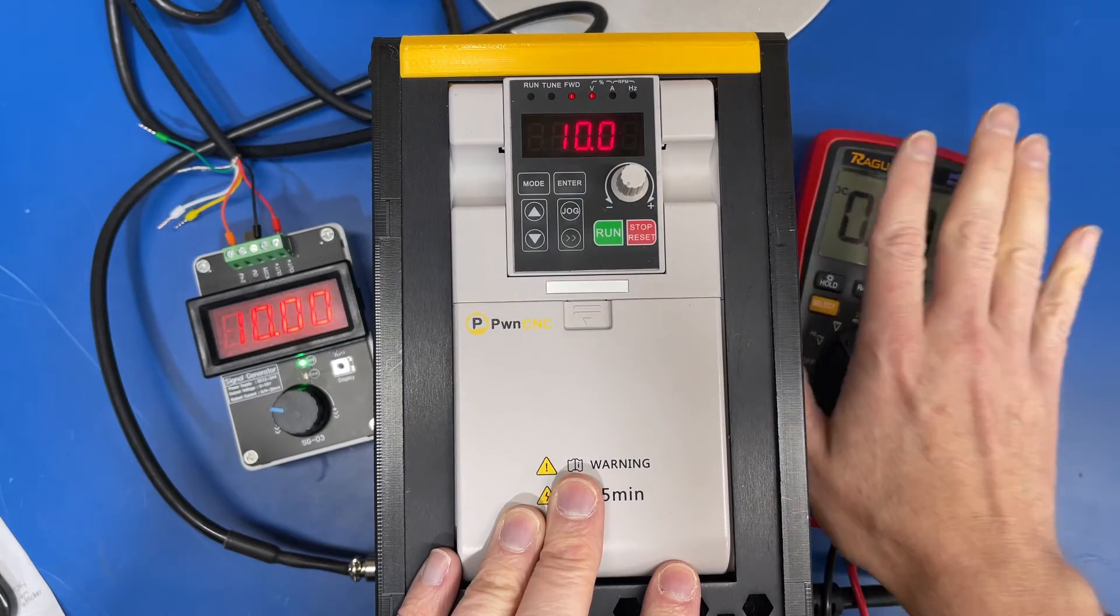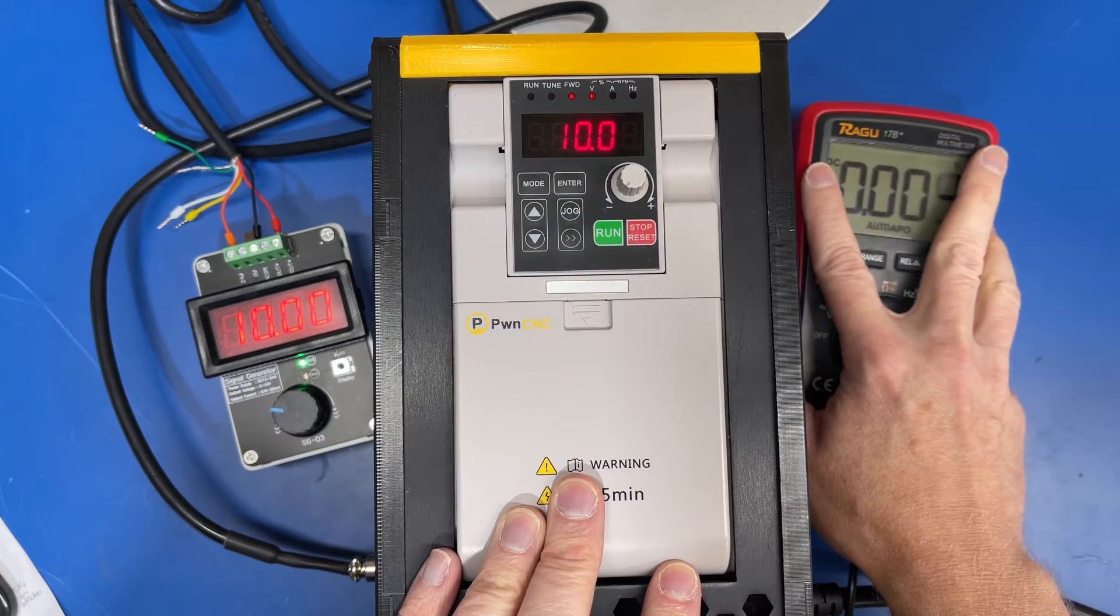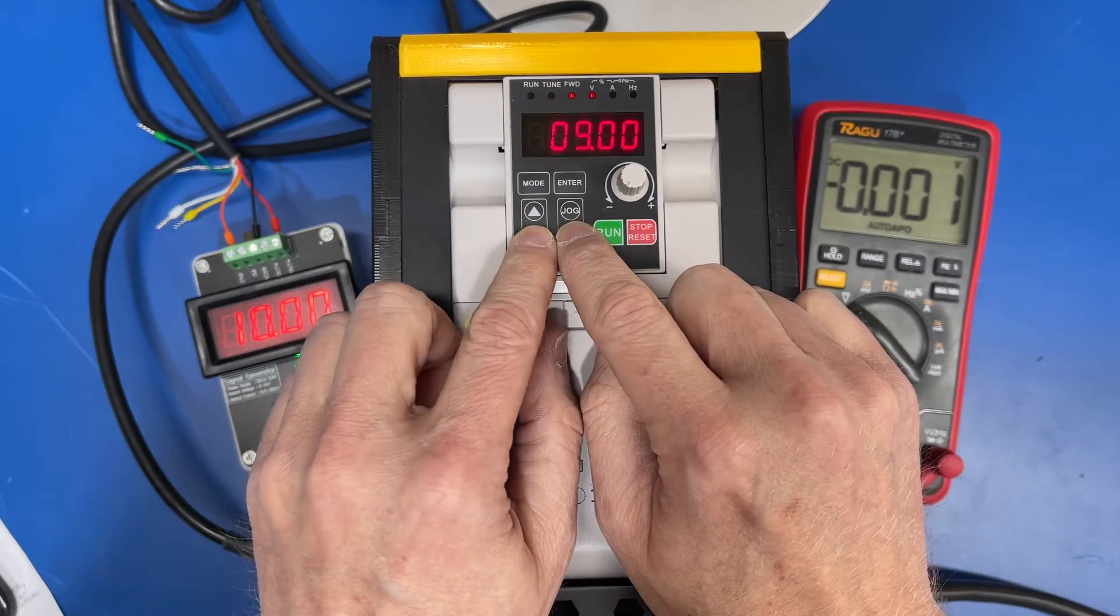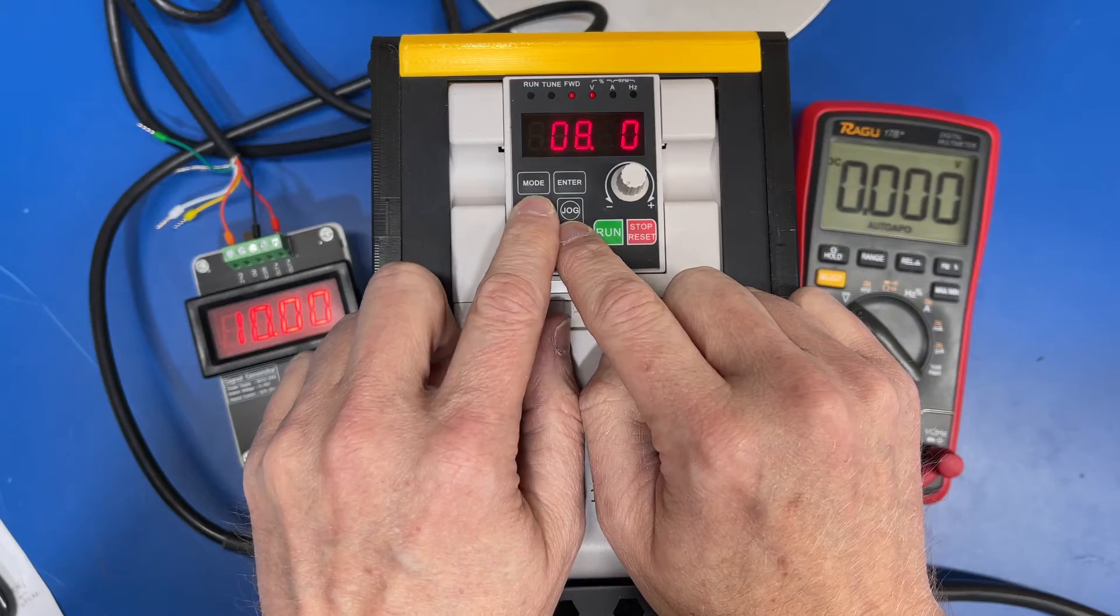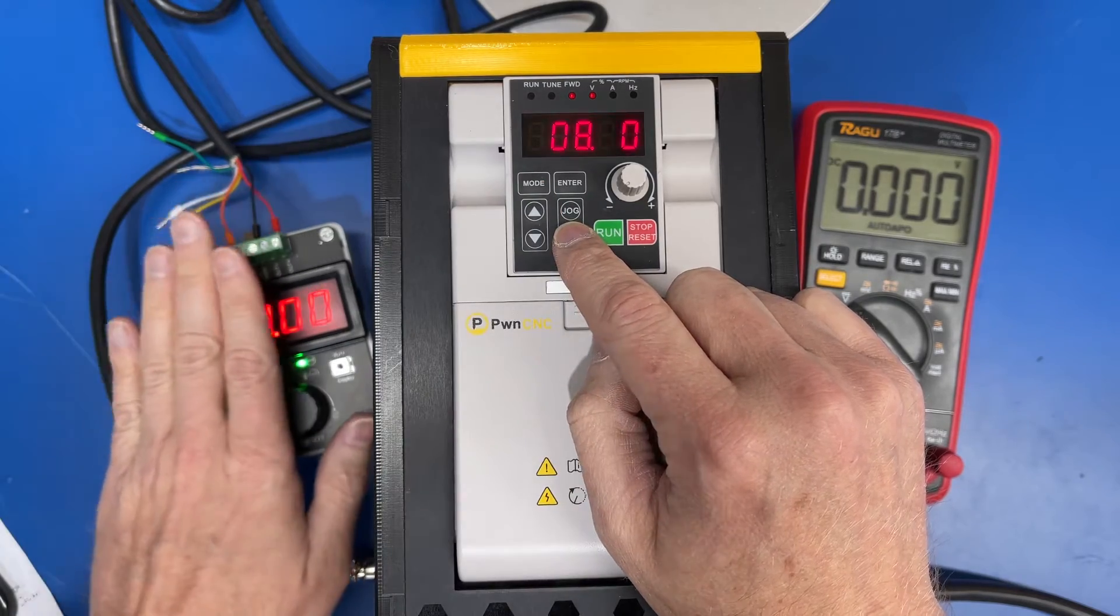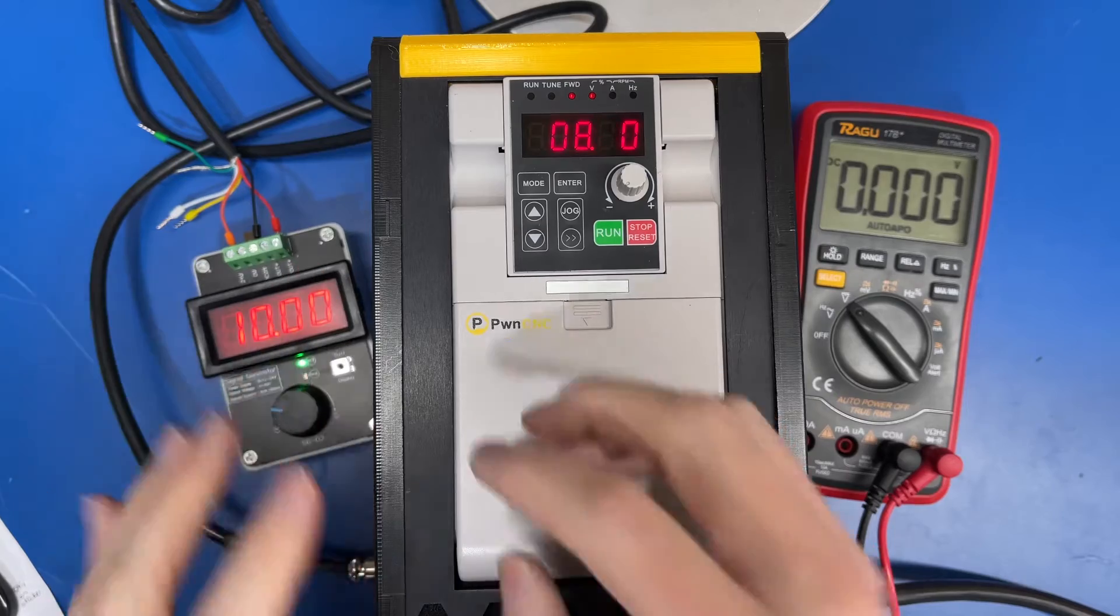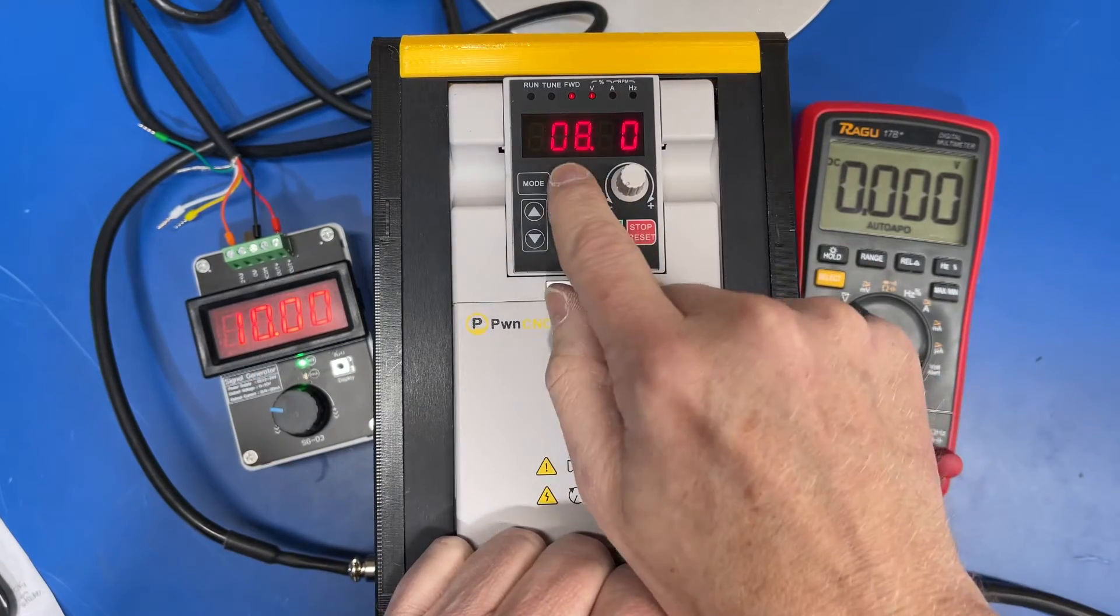Right now it's 10 volts. So we were seeing 8.4 volts as the maximum output. So let's adjust this down to 8.4 volts, since we know that's what our controller is able to output at the maximum speed. So if we hit save there, back out.